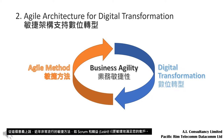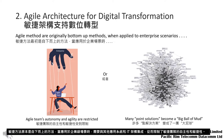Agile methods like Scrum and Lean have been a popular way to enable business agility and digital transformation in recent years. However, Agile methods are originally bottom-up methods. When applied to enterprise-level scenarios, they need to be integrated with other applications and IT architectures, and thus Agile teams' autonomy and agility are restricted. Or if Agile teams choose to disregard such constraints and deliver point solutions, soon the IT environment will become a mess — or so-called a big ball of mud.